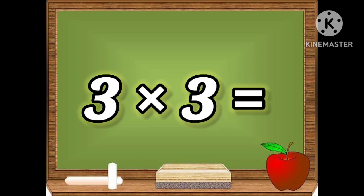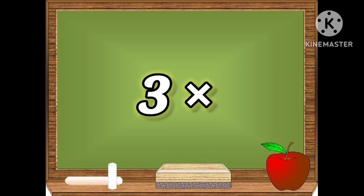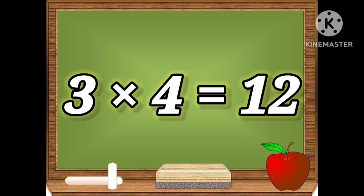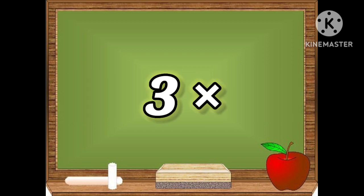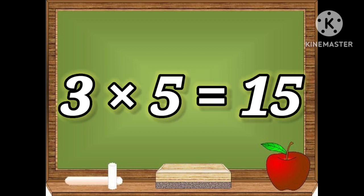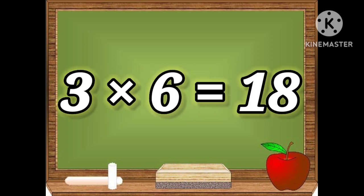Three threes are nine. Three fours are twelve. Three fives are fifteen. Three sixes are eighteen. Three sevens are twenty-one.